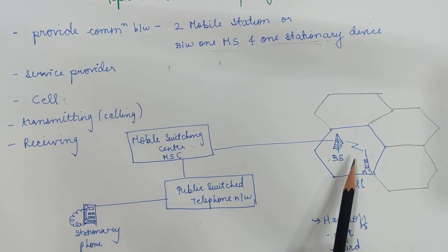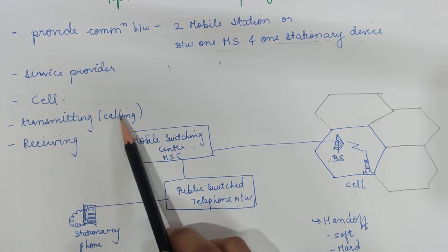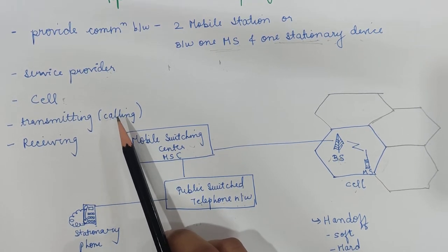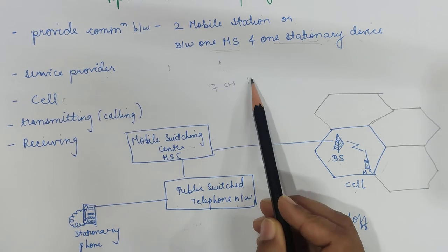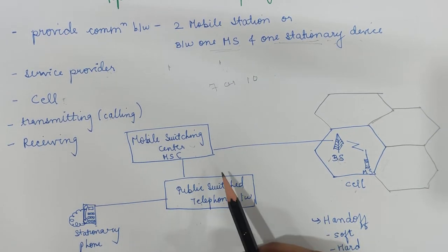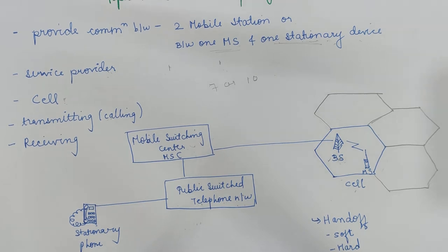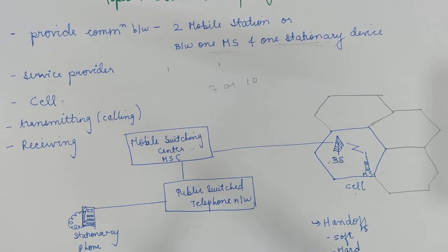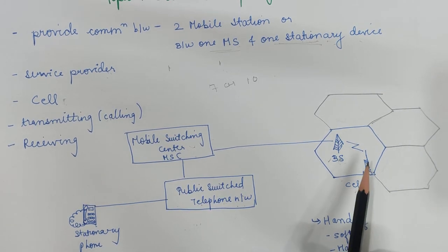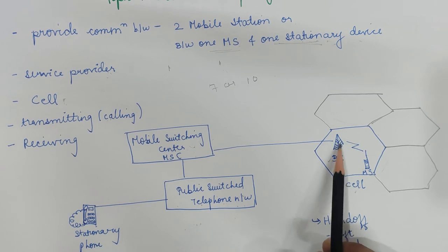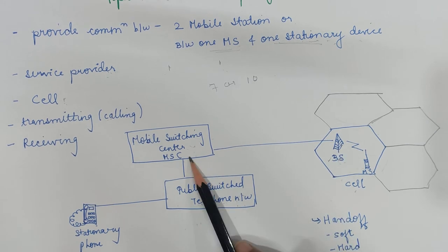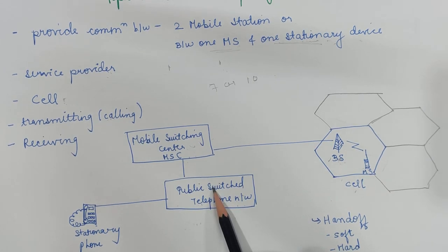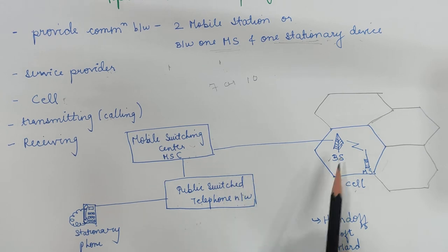The cell size is going to be increased or decreased depending upon the population of that particular area. For transmitting data or for calling a person, a call from a mobile station begins when the caller first enters the seven or ten digit code. The mobile station scans the band and channel and sends the phone number to the closest base station.